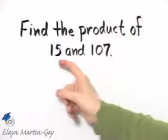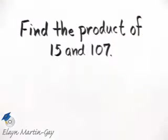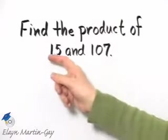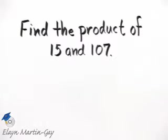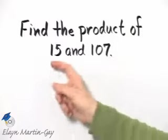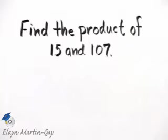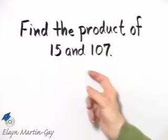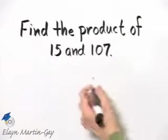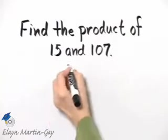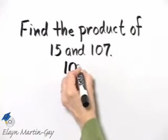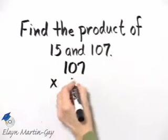So we multiply 15 and 107. I can do this by saying 15 times 107 or 107 times 15. Why is that? Remember when we multiply, order does not matter. So I'll write this as 107 times 15.